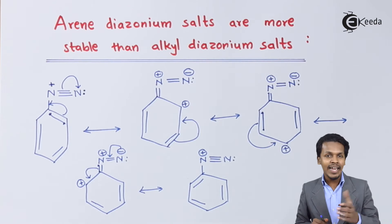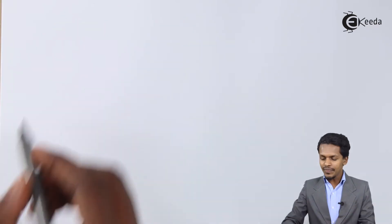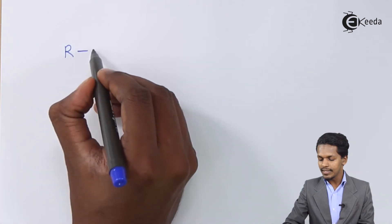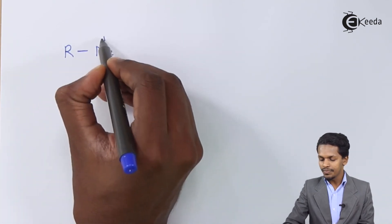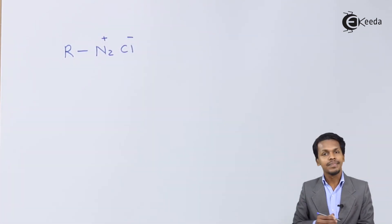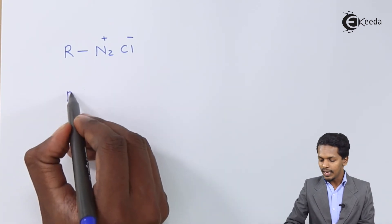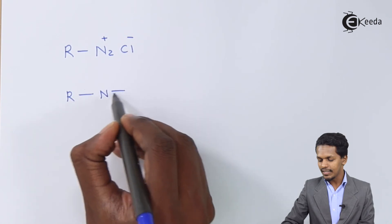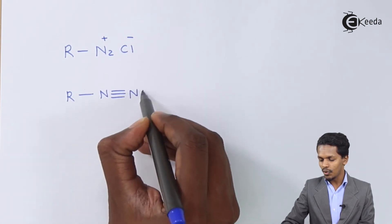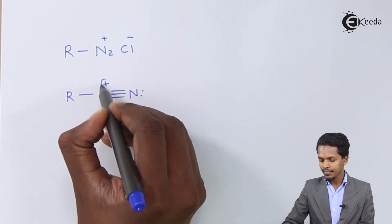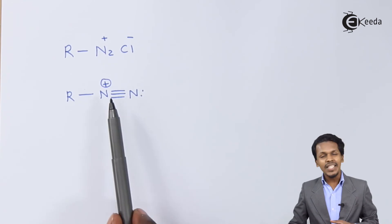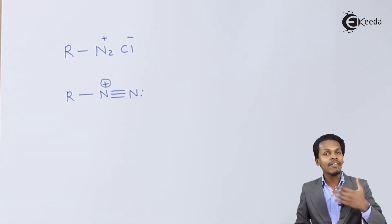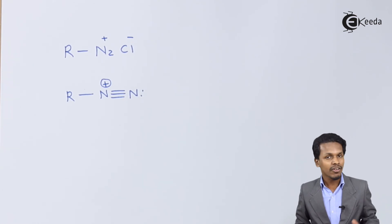Let me also talk about alkyl diazonium salts. Suppose we consider the general formula R-N2+ Cl-. If I am only concerned with this diazonium group, the structure we get shows that there will be no chance of resonance, and that's the reason there will also be no chance of delocalization of pi electrons.